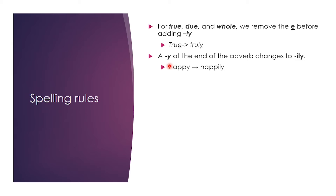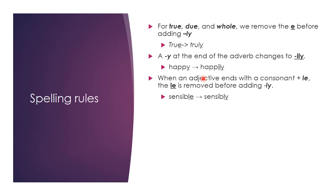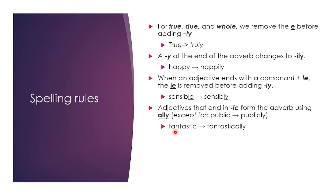Secondly, if the word ends in 'y', just remove the 'y' and add -ily to form an adverb. For example, happy becomes happily. Third, when an adjective ends with a consonant followed by -le, simply remove the -le and add -ly. For example, sensible becomes sensibly. Fourth, if the word contains -ic at the end, like fantastic, remove the -ic and add -ally. It becomes fantastically, which is an adverb.